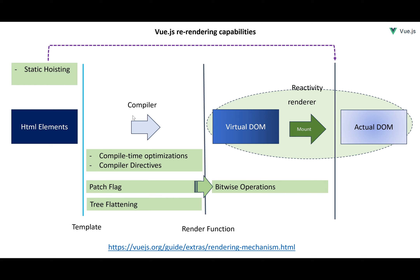When a change is triggered, the virtual DOM is smart because it knows which places to change. It triggers just those onto the actual DOM rendered in the browser. This reactivity in Vue.js is very useful for re-rendering because the renderer is very strong in doing comparison between two different DOMs.